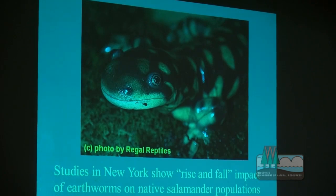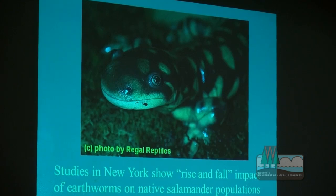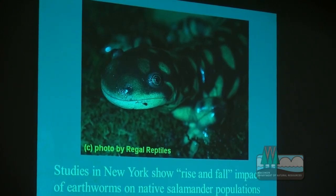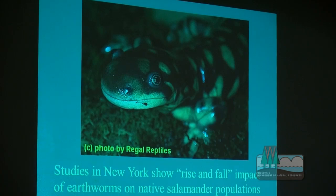This also affects ground-nesting birds and ground-foraging birds, because we no longer have many of the soil invertebrates normally found in the litter layer. It also affects salamanders — while adult salamanders will feed on earthworms, young salamanders must feed on much smaller soil organisms found in the litter and need to stay moist in that litter layer. Salamanders are very long-lived organisms, and we'll probably see a decline in salamander populations due to this.